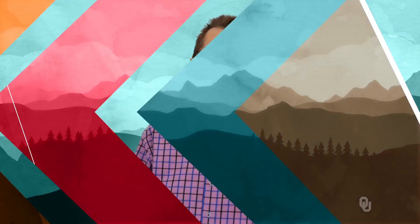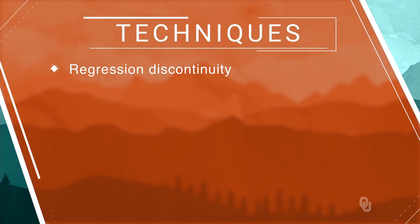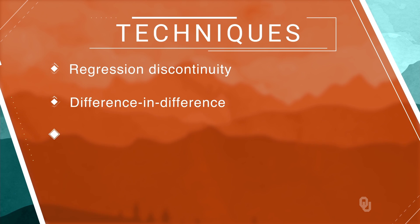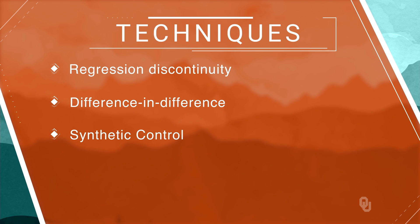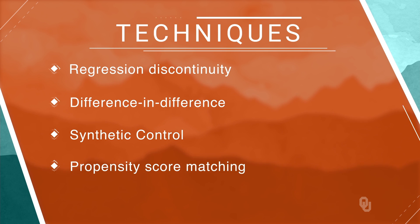In this course, we will learn the ideas behind the techniques of regression discontinuity, difference in difference, synthetic control, and propensity score matching. We'll see how these methods can distinguish causality from correlation, and I'll give you real-world research datasets that you will use to implement and master the techniques in practice.